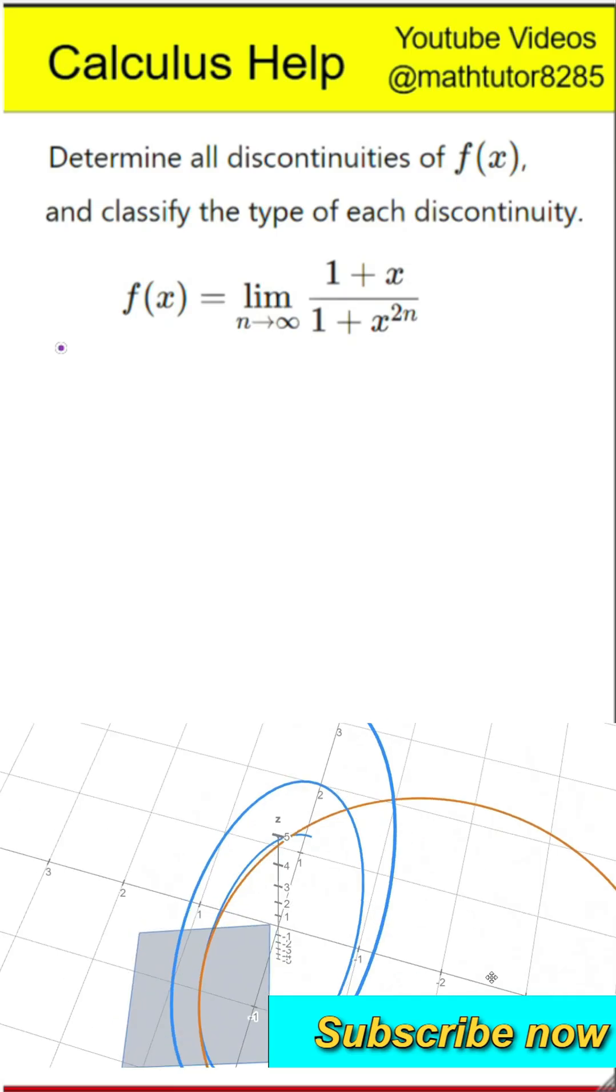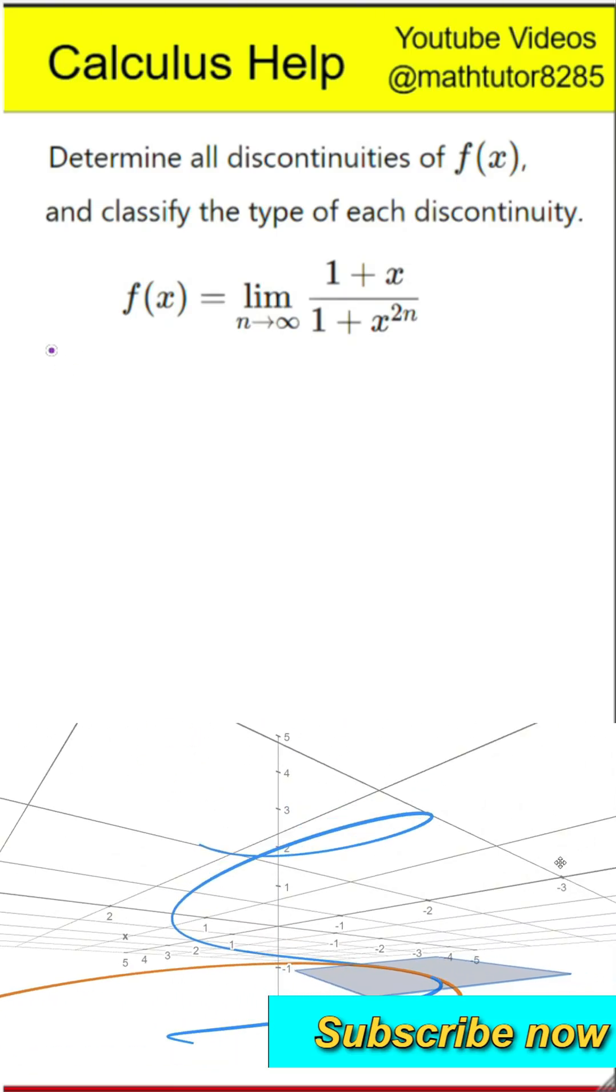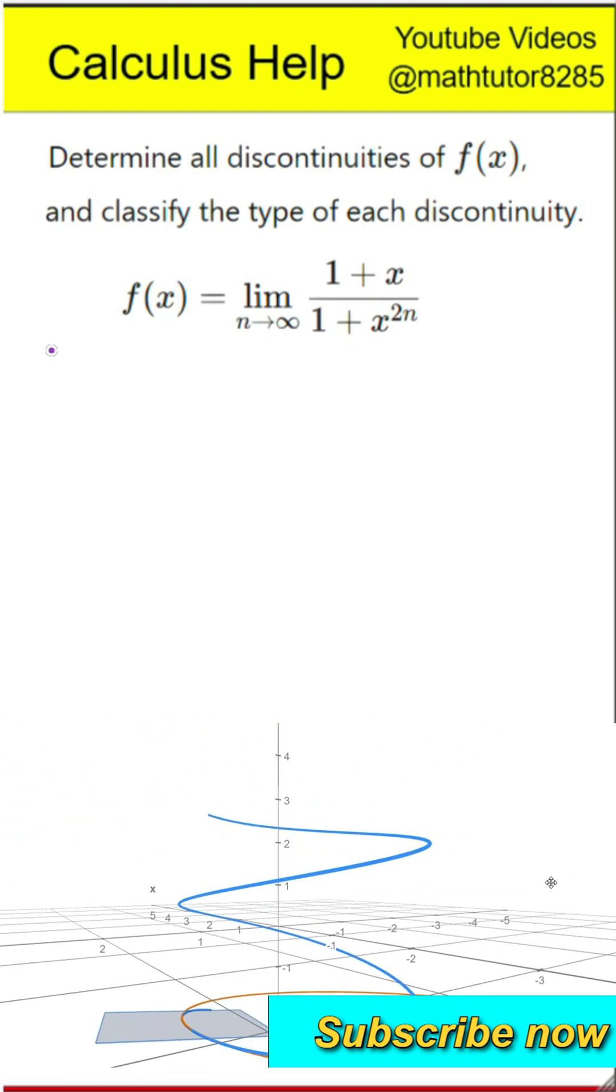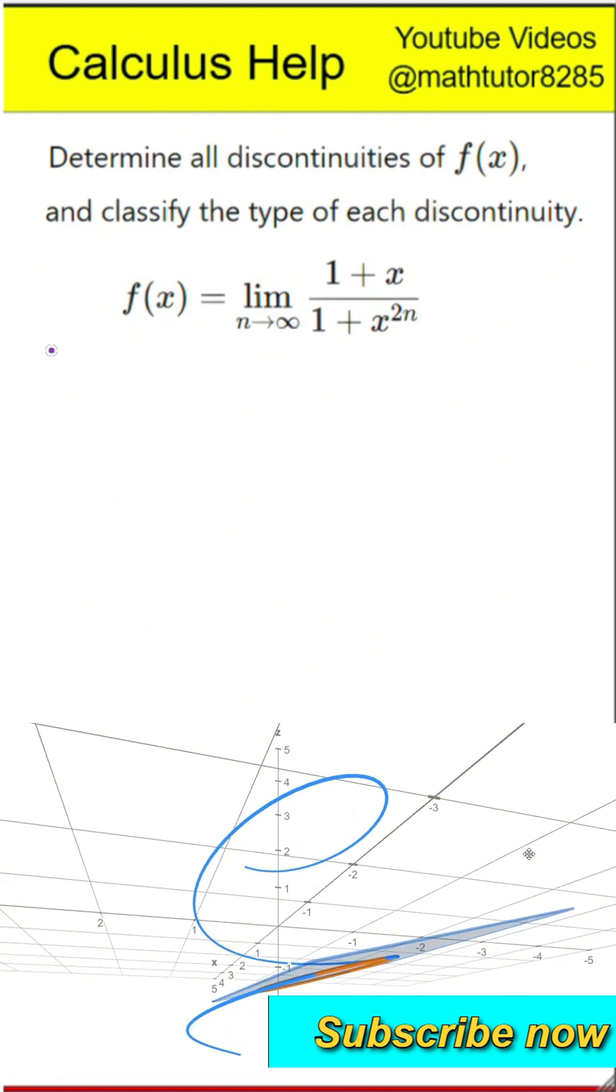This question explores the continuity of a piecewise function defined by a limit. Let f of x be defined as the limit as n approaches infinity of the fraction 1 plus x divided by 1 plus x raised to the power 2n. Determine all points where the function f is not continuous and for each identify the type of discontinuity.